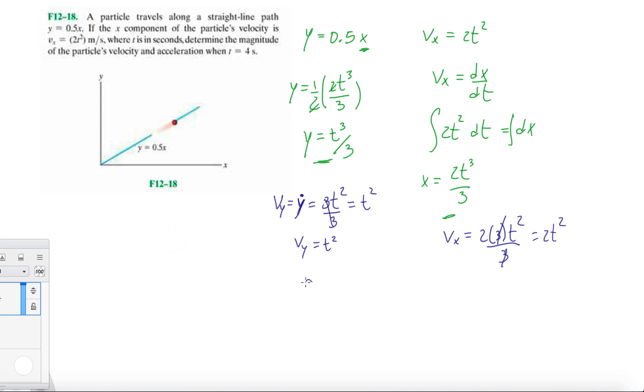And then ax... sorry, this is ay, ay is just 2t, and then ax is equal to 4t. It's freezing again. So we have our two most important things: ax and vx. We have our velocities, our accelerations.